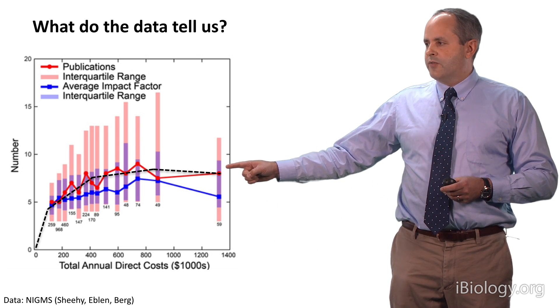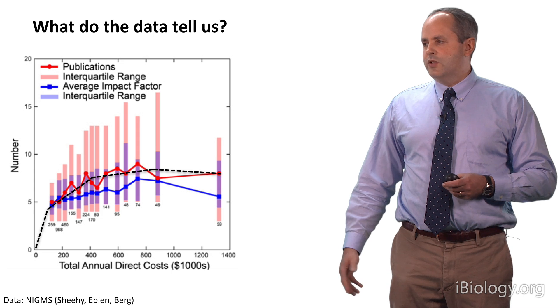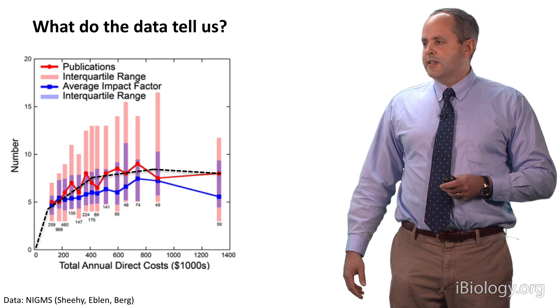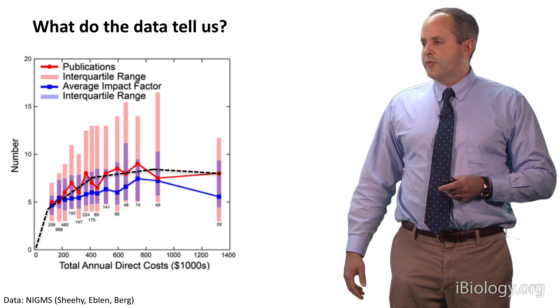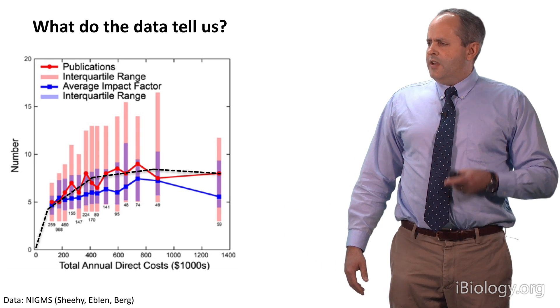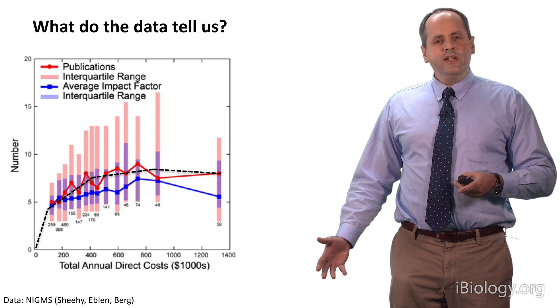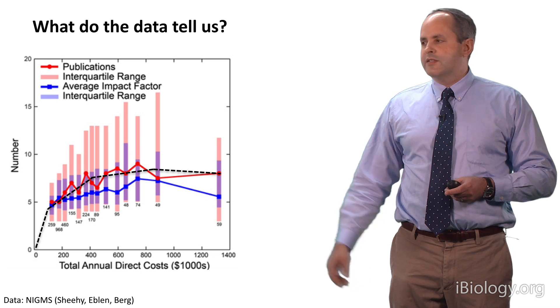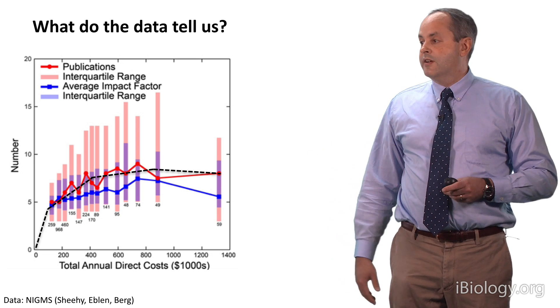Now, if we focus on the publications metric, the red line, what you can see is that going from zero direct costs to some fairly modest amount, say $200,000 to $300,000 per year in direct costs, leads to a very rapid rise in productivity. I've drawn a black dotted line through the data to guide your eye. That's not very surprising, because if you have no money, it's rather hard to do much research. What really was striking about these data, however, is that once one goes over, say, $300,000 or so in direct cost, although productivity does increase, it doesn't increase very rapidly. There's a very shallow slope to this line here, indicating diminishing returns as a function of funding levels.